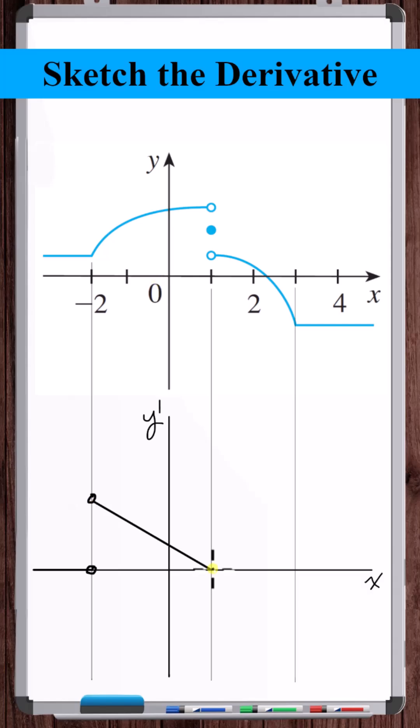The derivative doesn't exist at any discontinuity. From here, the slope looks to start at 0 and decreases to a negative value. This also looks like it could be parabolic, so we'll assume a straight line for the derivative as well.